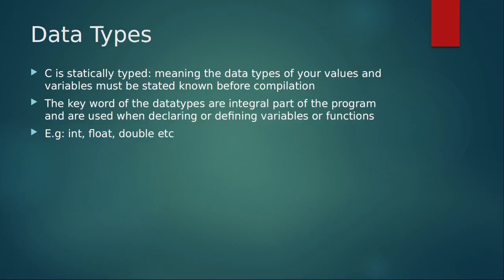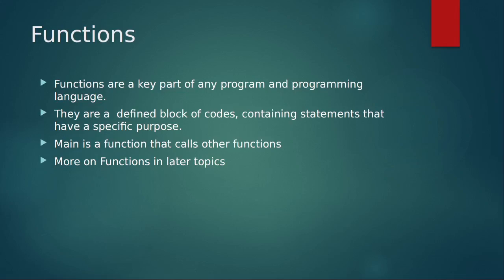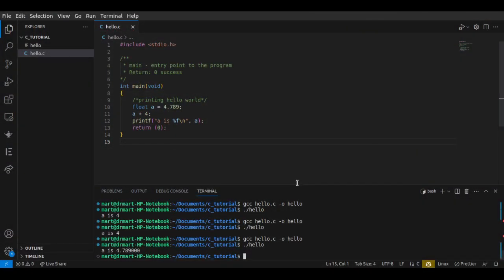So right here we've mentioned the data type. The next thing is functions, right? We'll discuss about functions much later. But functions are a key part of any program and programming language. They are a defined block of code containing statements that have a specific purpose. So functions want to do something. Main is a function that calls other functions. So in our program we saw that main, we saw main here. This is main, this is the function. And in that function we called this function. So main was calling printf, which is also a function. So going back to our presentation, we'll discuss more on functions later on.